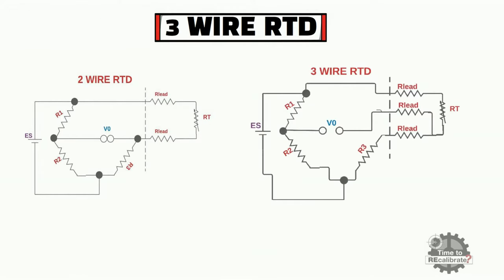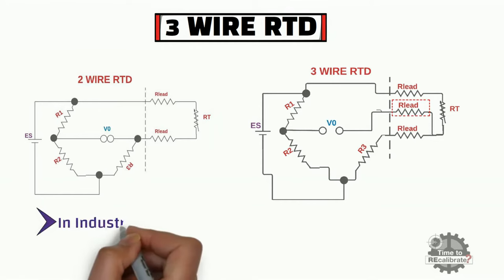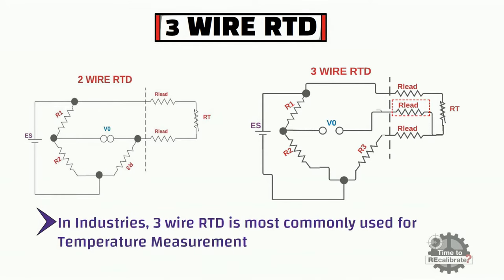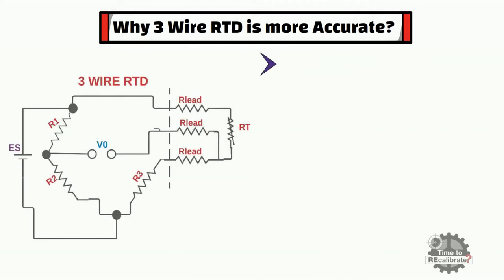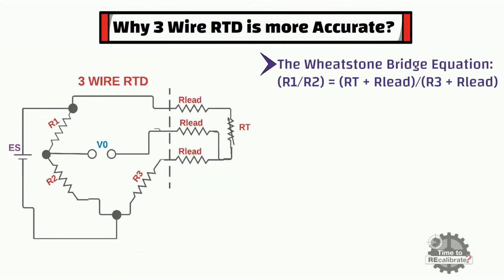3-wire RTD has an extra lead wire. This extra lead wire eliminates the effect of lead resistance in the circuit, which is not possible with 2-wire RTD. Hence, this is the reason that 3-wire RTD is the most commonly used RTD in industries. As you can see, this is the Wheatstone bridge equation for 3-wire RTD. In this equation, the numerator and denominator both contain R-lead, and because of this, the right-hand side ratio does not get affected by lead resistance — both lead resistances cancel each other's effects in the circuit.